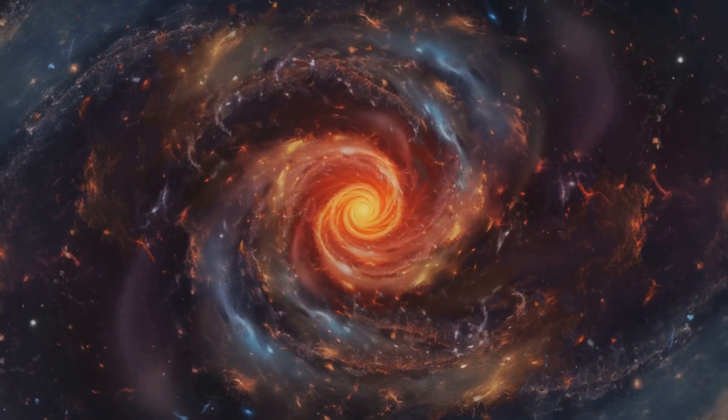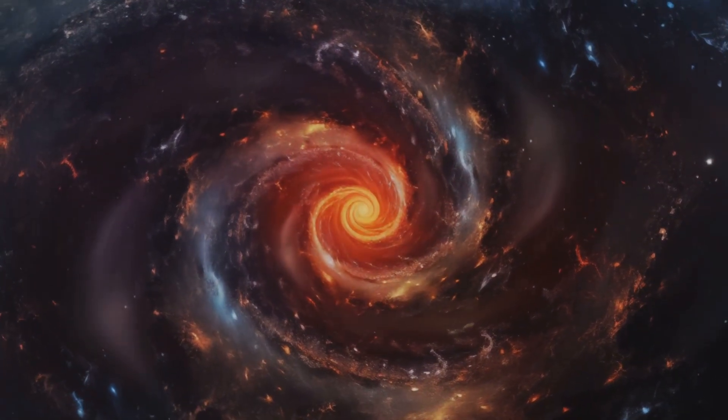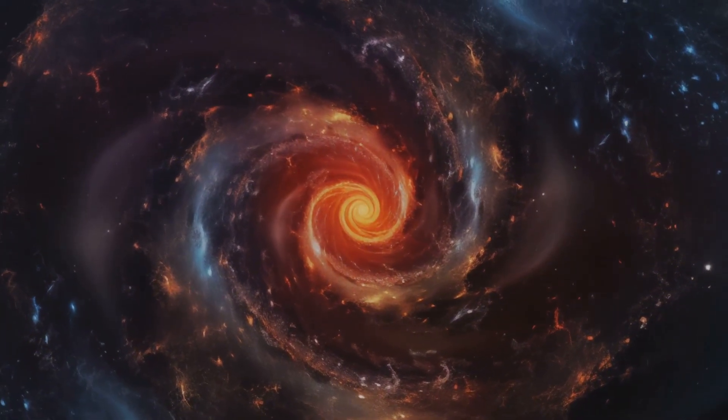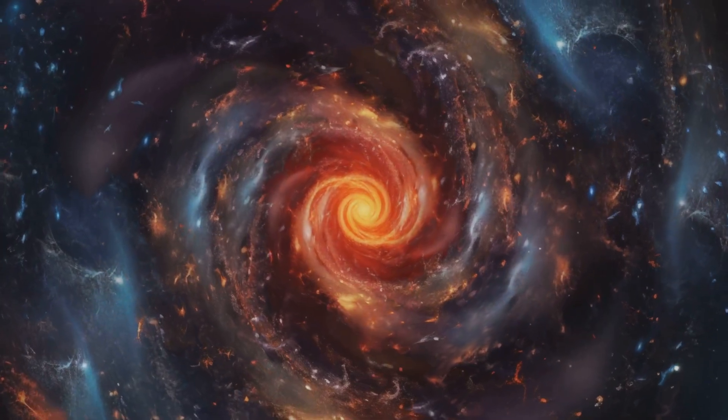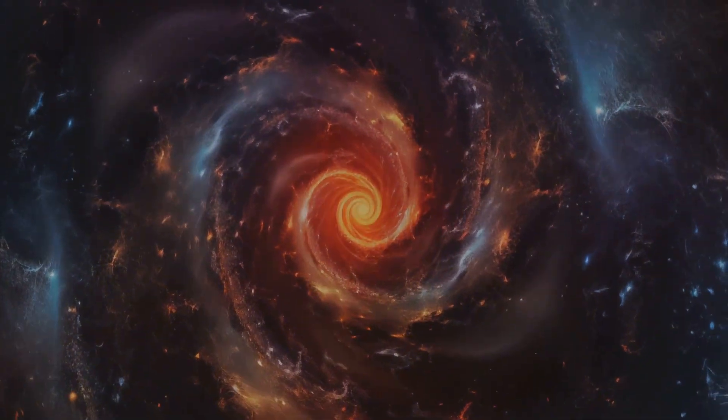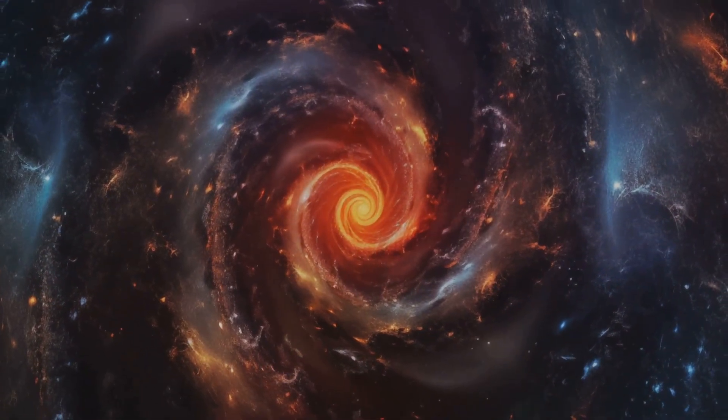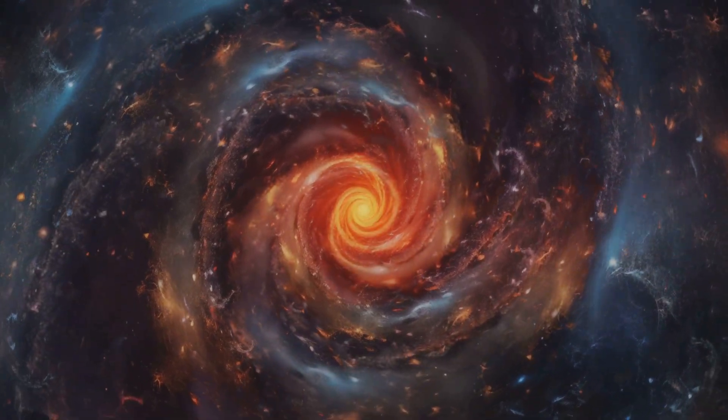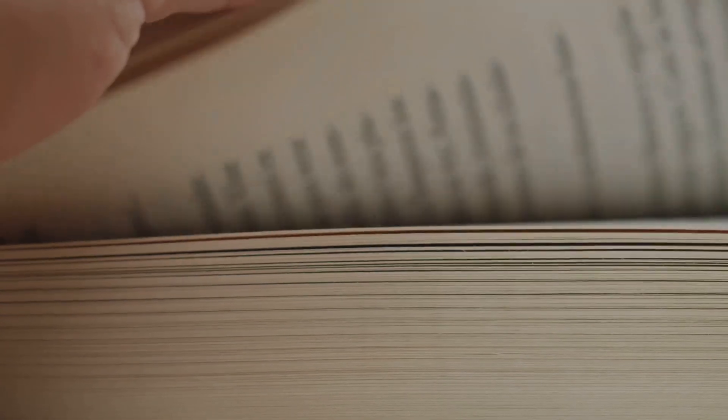Tonight, we're diving deep into that wall. We're going to explore why light speed is the ultimate cosmic limit, why Einstein's theory of relativity makes it unavoidable, and why Brian Cox insists that no amount of human genius will ever break through it. This isn't just about rockets and spaceships. It's about the very structure of the universe itself.